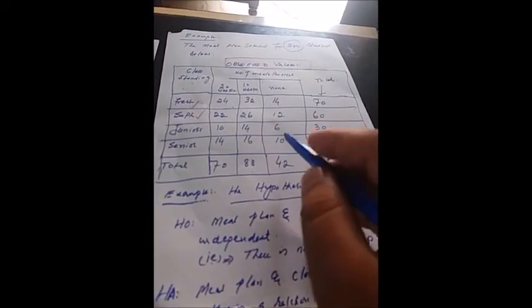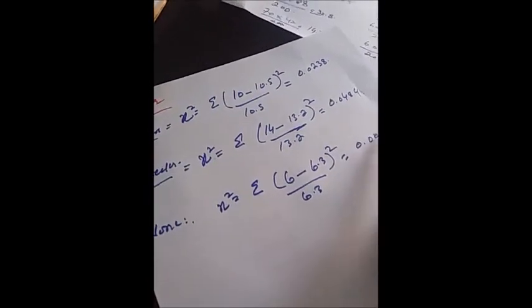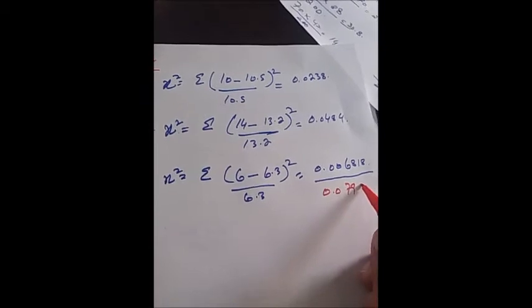For the 'None' category using the same formula: the observed value for juniors is 6 and the expected value is 6.3. Chi-square equals 6 minus 6.3, whole square, divided by 6.3, which is approximately 0.0143. The subtotal of these figures will be 0.079018.